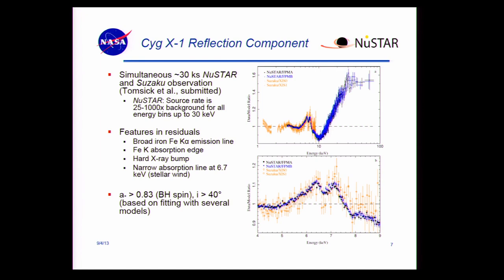The features to notice here are the broad iron K-alpha emission line, the iron absorption edge just above it, and the hard X-ray bump — there's an argument in our group whether it's a bump or a hump, but I'm going to use bump. We see a strong increase that is the hard X-ray bump. For Cyg X-1, it's in a high-mass system with a stellar wind from the companion, so we actually have a narrow absorption line at 6.7 keV from material in the stellar wind. You can see the narrow line and then how broad the emission line is in comparison.